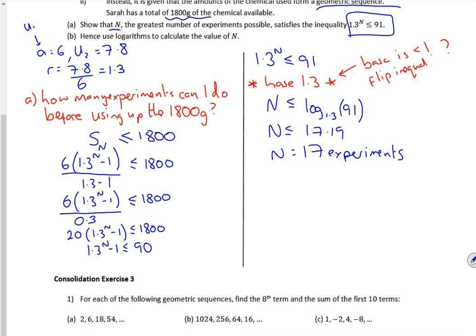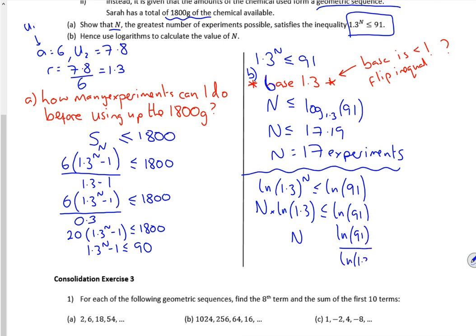Right. So that was a. This is b. I'm going to do it with just using ln. So if I just take ln, we've got ln of 1.3 to the power n is less than ln of 91. But the power at the front, n times by ln of 1.3 is less than ln of 91. So n would be ln of 91 divided by ln of 1.3. Now you can't combine that.